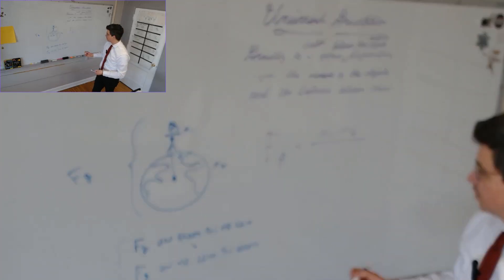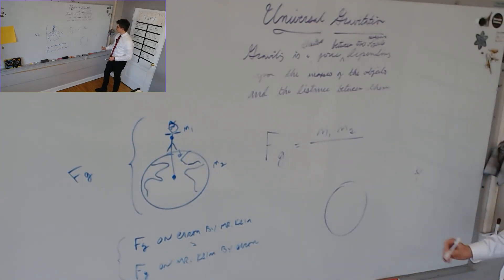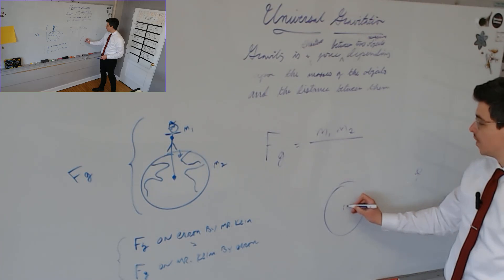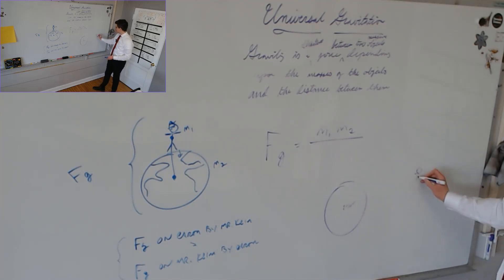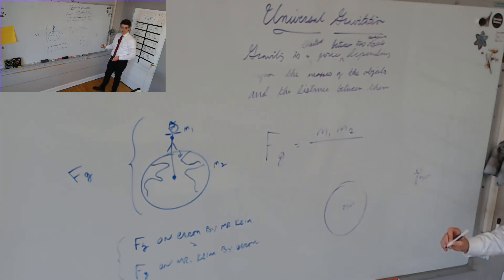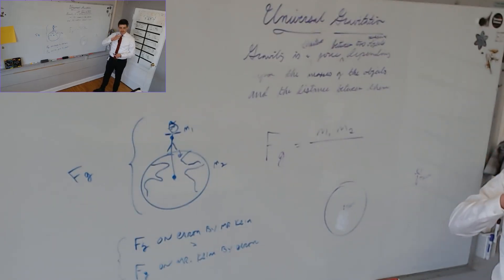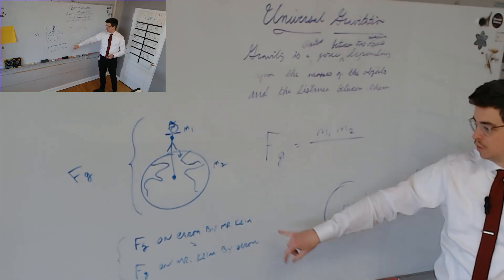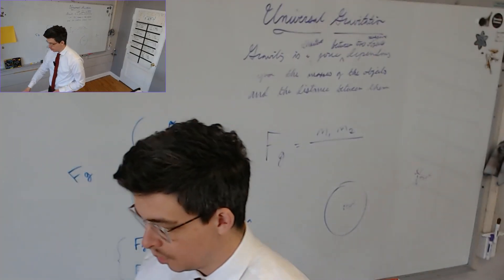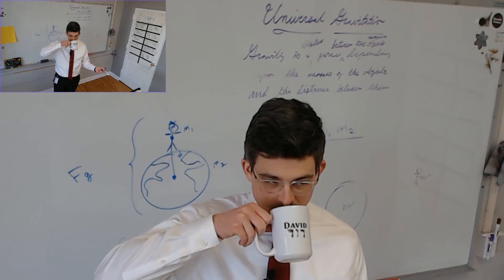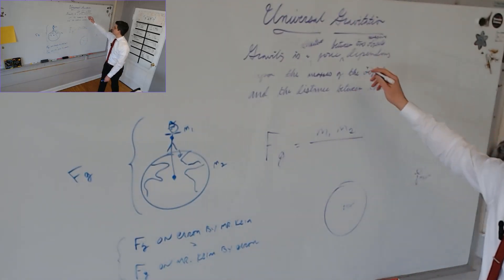The same force acting on both — the same 720 newton force — a 720 newton force up on planet Earth is not going to accelerate its very large mass. A 720 newton force down on me is going to accelerate my smaller mass. Remember Newton's third law: whatever I am pulled on by Earth, I also pull on the Earth, and not just the Earth but any other object in the solar system, the galaxy, or the universe. That's why it's called universal gravitation.